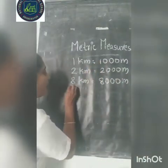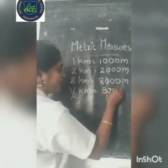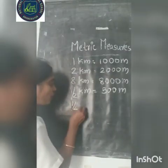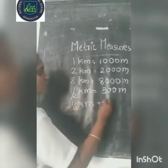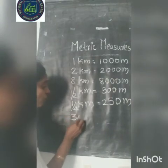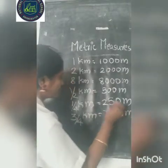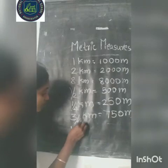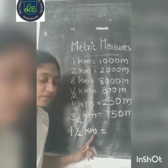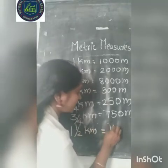Similarly, half kilometer is equal to 500 meter. And 1 by 4 kilometer is equal to 250 meter. And 3 by 4 kilometer is equal to 750 meter. And 1 and a half kilometer is equal to 1000 meter plus 500 meter, so it is 1500 meter.